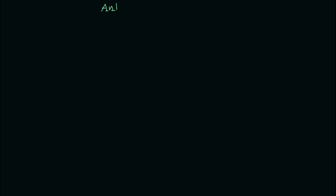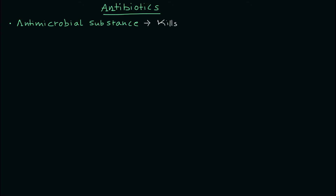Let's start the video with the topic of today's lecture: antibiotics. Antibiotics are the antimicrobial substances that can kill or inhibit the growth of microorganisms, specifically bacteria. I'm going to write 'antimicrobial substance' instead of antibiotics here. Antibiotics, or antimicrobial substances, are chemical compounds that can kill or inhibit the growth of microorganisms, specifically bacteria.